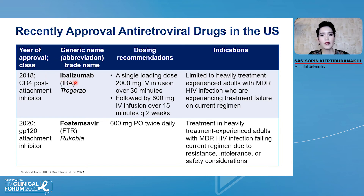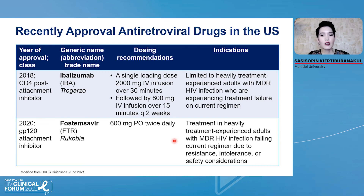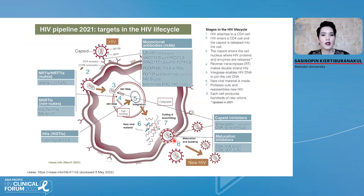Ibalizumab was approved in the US in 2018. This is a CD4 post-attachment inhibitor and is an intravenous drug infusion with a loading dose and then continued every two weeks. The second one is fostemsavir — this is an oral drug approved in the US in 2020. This is a gp160 attachment inhibitor. These are recently approved drugs in the US for heavily treatment-experienced patients. We need more drugs for patients who have multi-drug resistance — including islatravir, capsid inhibitor lenacapavir, and another maturation inhibitor. We are waiting for new drugs, as some are in study for heavily treatment-experienced patients.